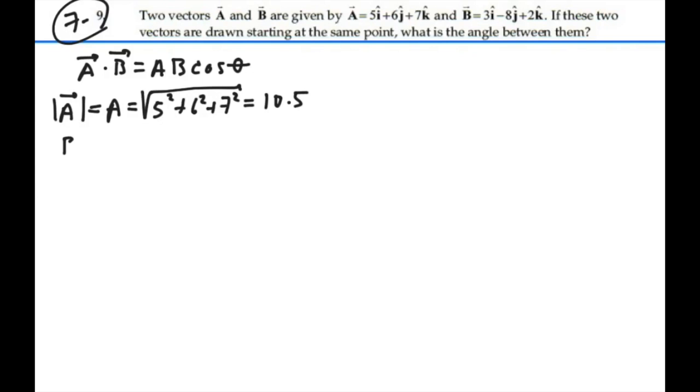Now for B, we would have three-squared plus a negative eight-squared, which when we square it will be a positive quantity, plus two-squared, all that square root. So if I take three-squared plus eight-squared plus two-squared square root, I get eight-point-seven-seven.